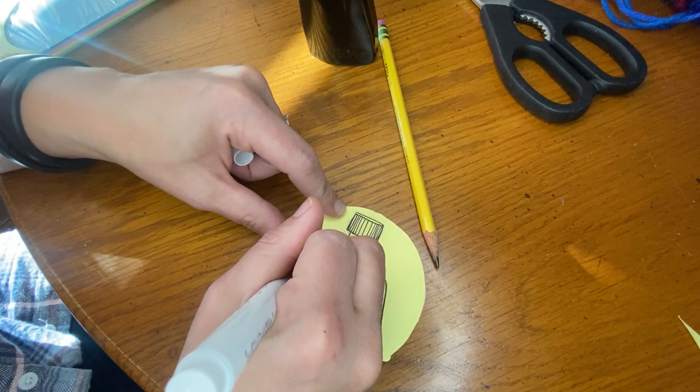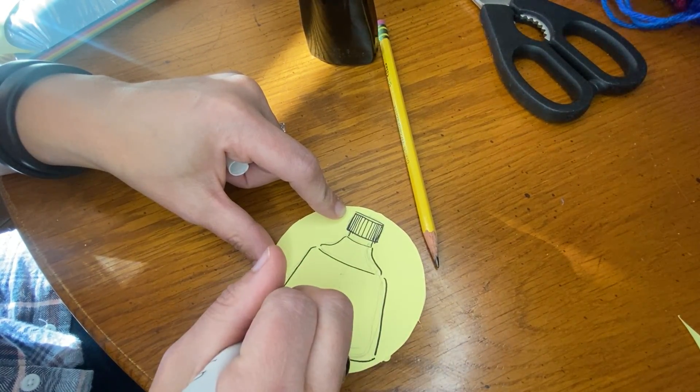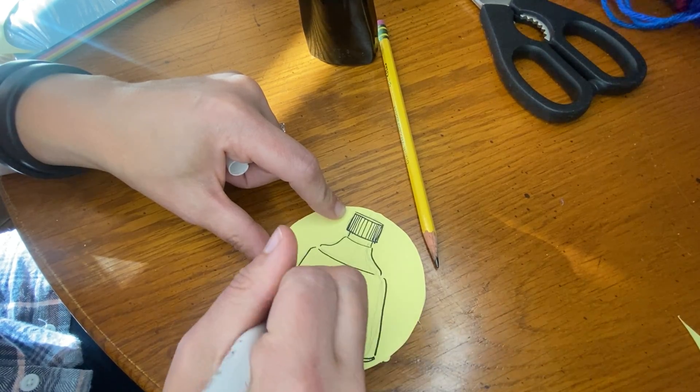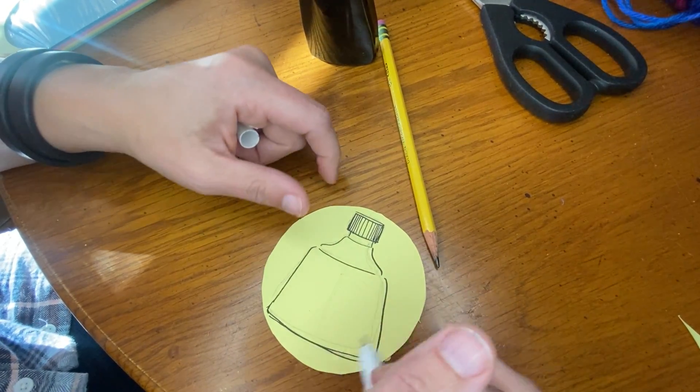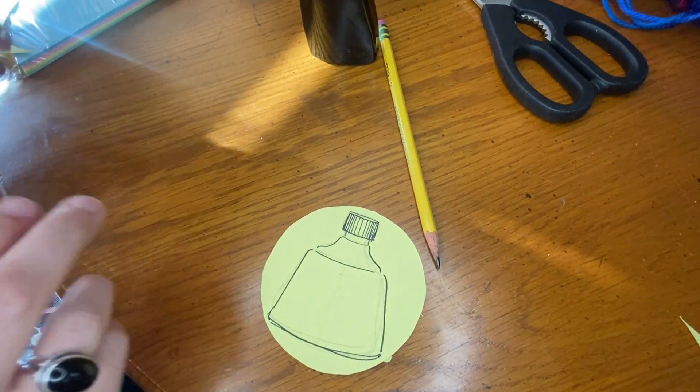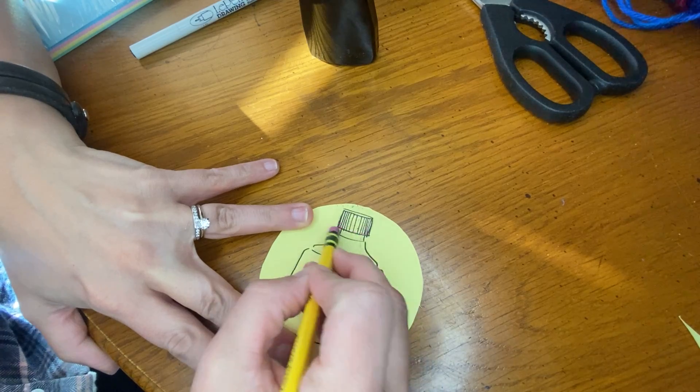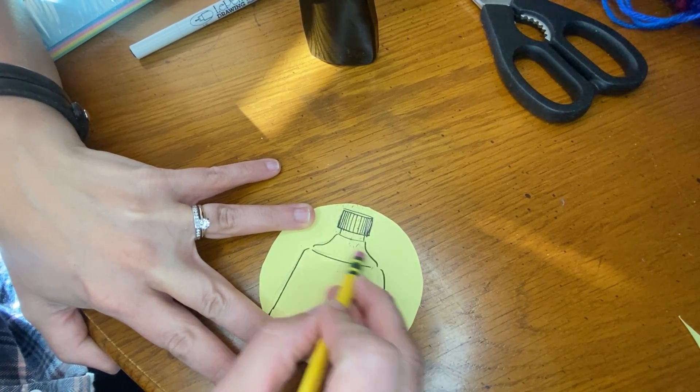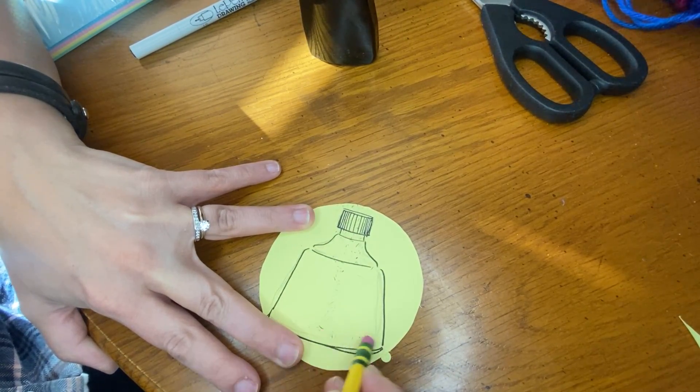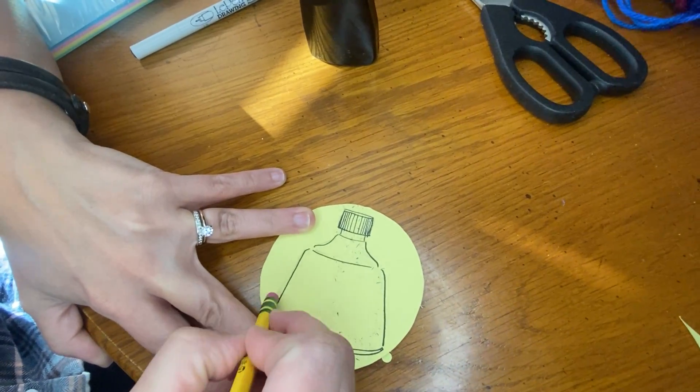Now again, remember I kind of made my bottle more squat than it actually is in reality, because I wanted to make sure it fit in my circle. You can choose to do that, or you can choose to do it the right way. Right way meaning like more accurate proportions from what you see. But I really want you to take a look at that object that you are drawing and try to draw it the best you can from observation.